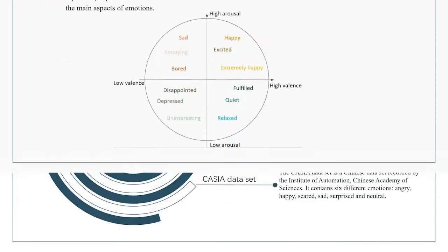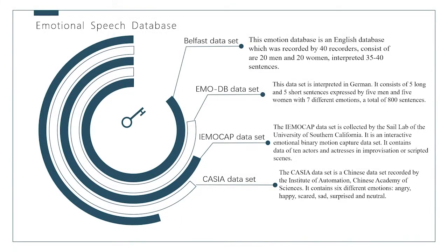Next, I will introduce some emotional databases. As the performance of emotional recognition is closely related to the database used, the database is key to speech emotion recognition. Due to differences in language and the expression of emotions, there is no single standard database accepted by all researchers. However, speech emotion databases have become more and more refined. The Belfast dataset contains five basic discrete emotions, including angry, sadness, happiness, fun, and neutrality.